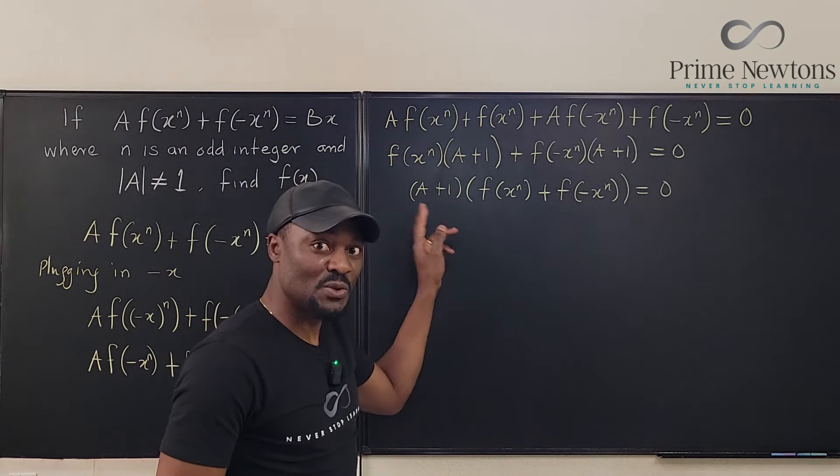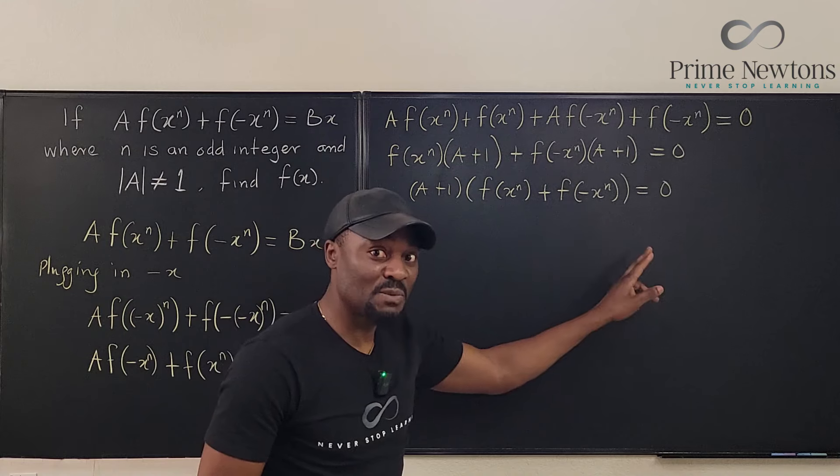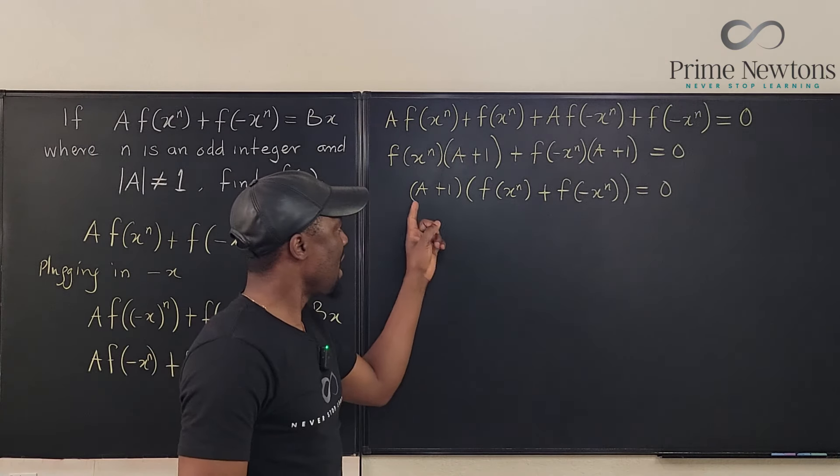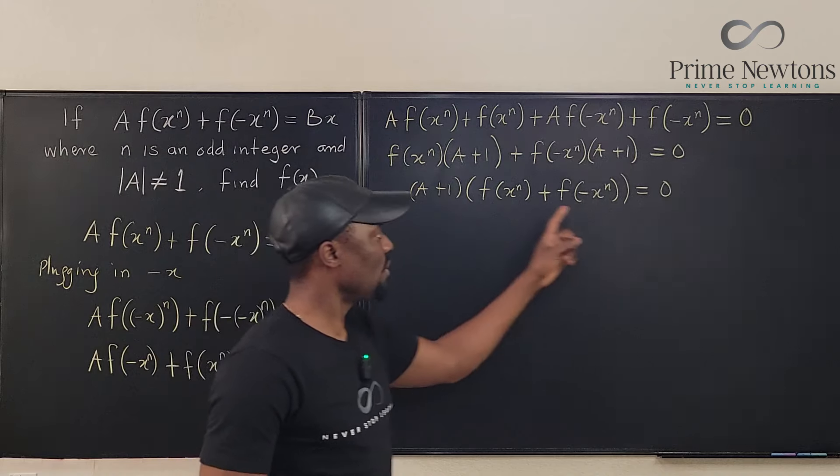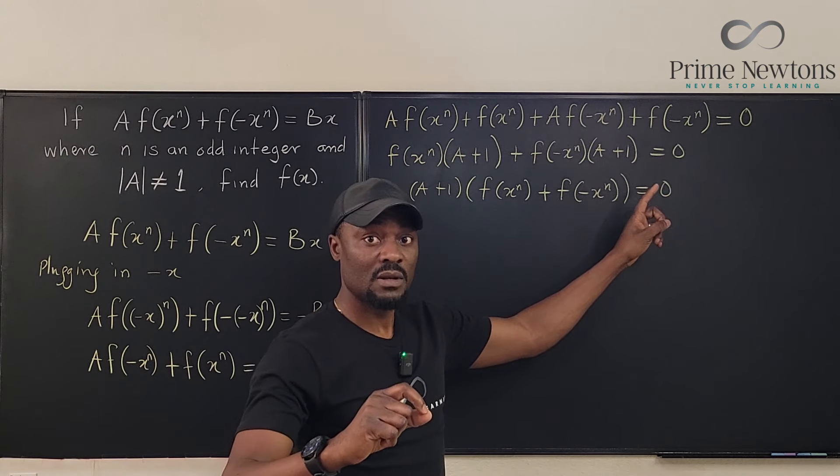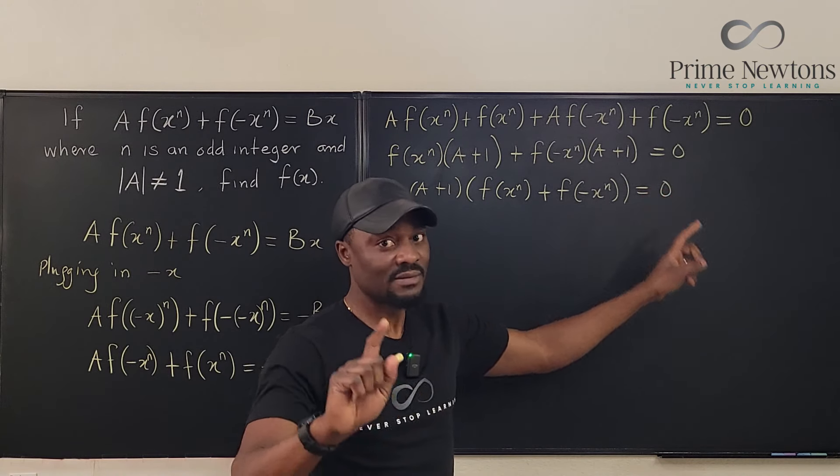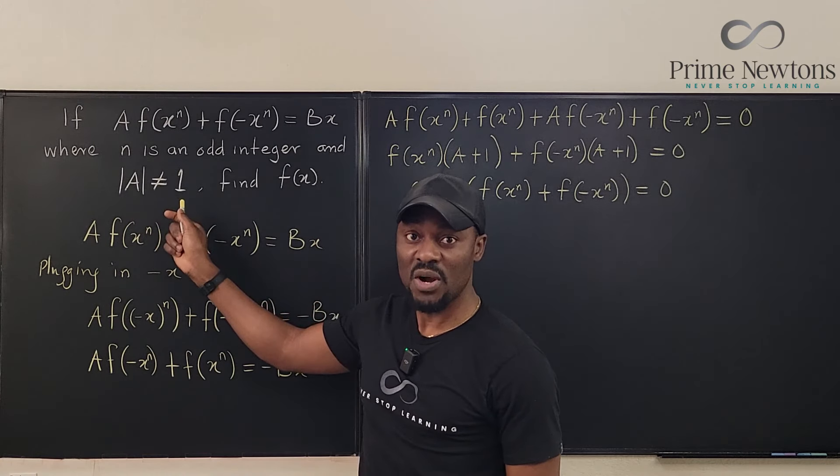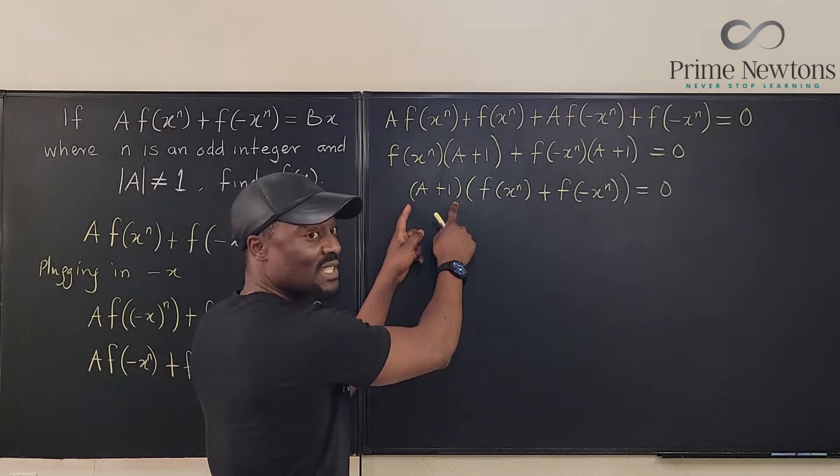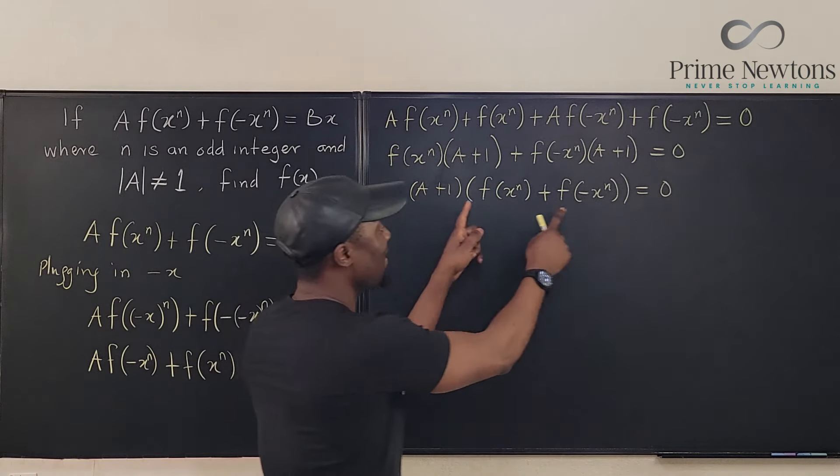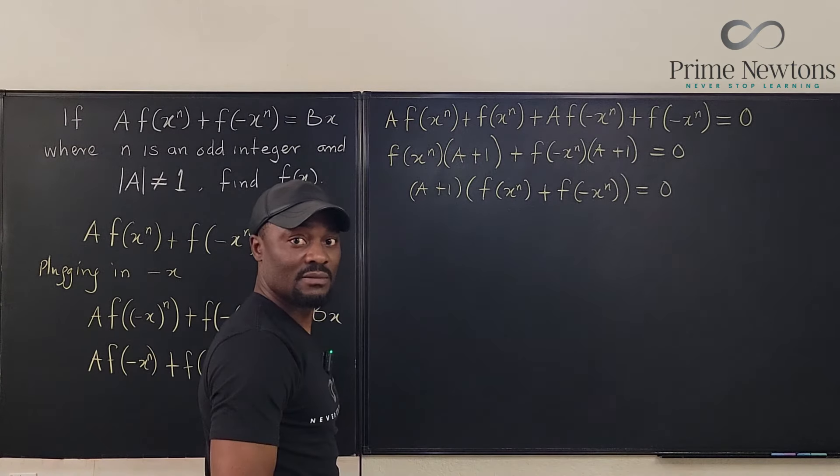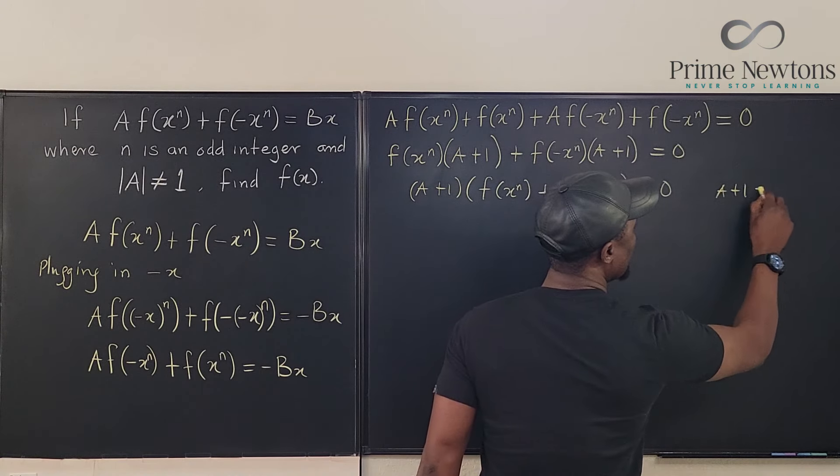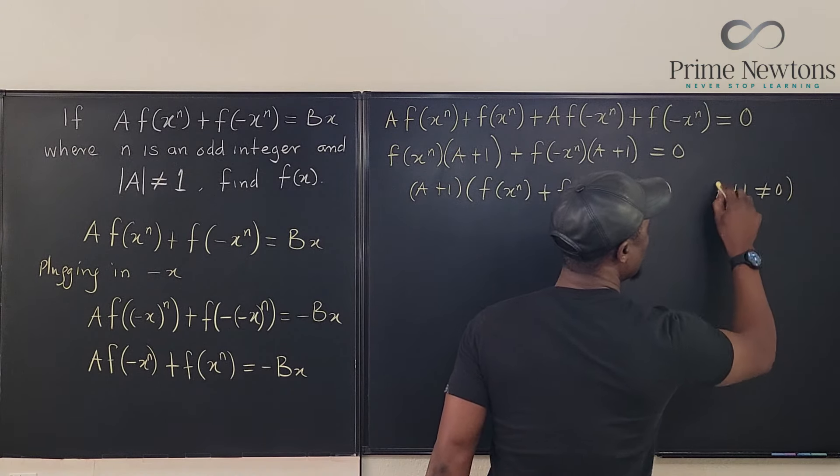Now, this is a product of two terms. One of them must be zero, or both of them must be zero. A plus 1 equals zero will mean A equals negative 1. But we said the absolute value of A is not 1, so we cannot. This cannot be zero because of that. This has got to be our zero. Okay? So we know that A plus 1 is not equal to zero.